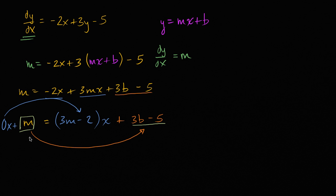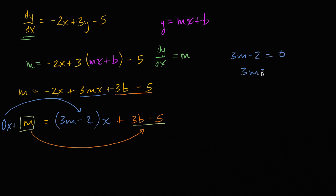Let's use that information to solve for m and b. From the first equation, 3m minus 2 equals zero, so 3m equals 2, which gives us m equals two thirds. So we've figured out what m is.